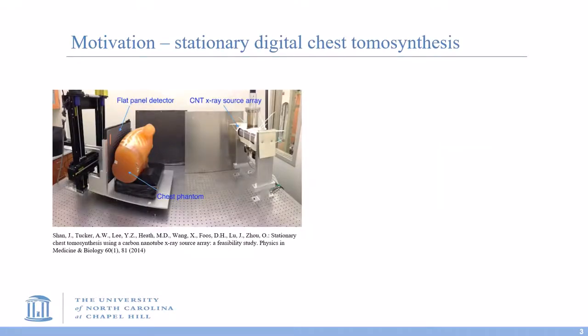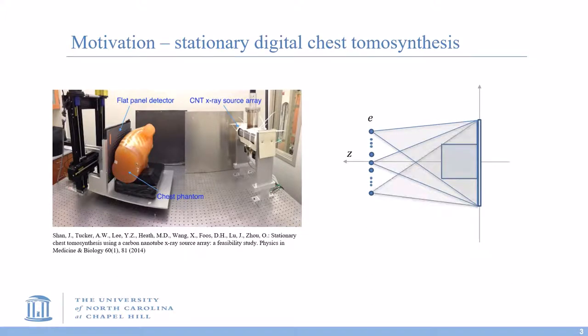Many people might not be familiar with sDCT, so I will introduce this modality. The left picture is an sDCT prototype machine developed at UNC, and it is the machine we use to acquire our clinical data. In this prototype, we place the emitters evenly along a line which is parallel to the detector, and each emitter will operate one after another.